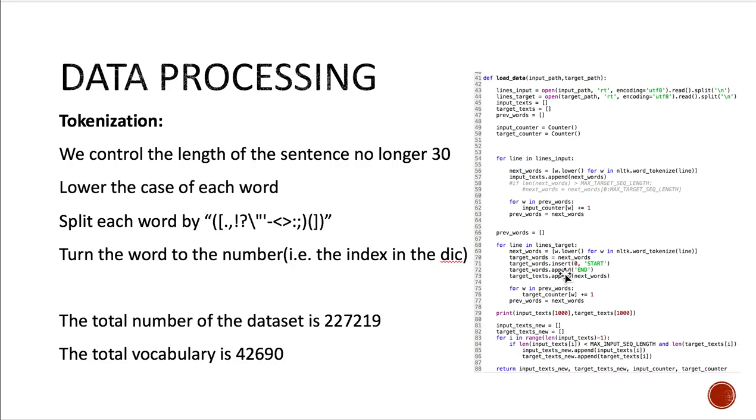And then we lower the case of each word and we split each word by the punctuation. And we also turn the word to the number which is the index of the position in the dictionary. The total number of the dataset is around 22,000. The total vocabulary is around 42,000.